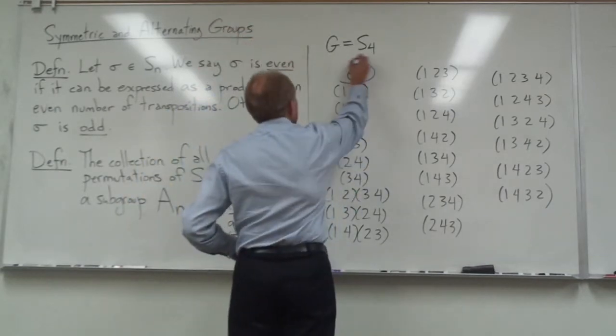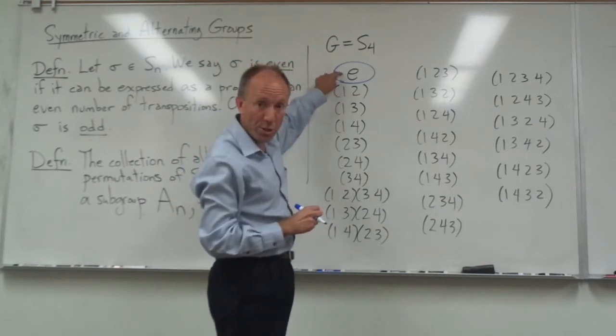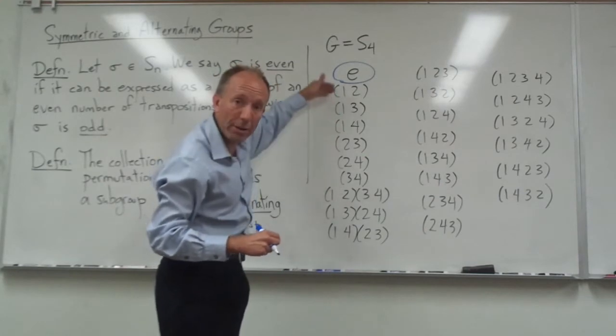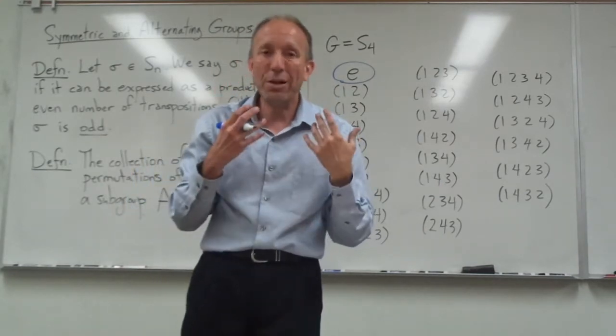Let's take a look. The identity element, of course, had better be in there. That's zero transpositions. The next six elements in this first column here, however, consist of one transposition and one is odd.